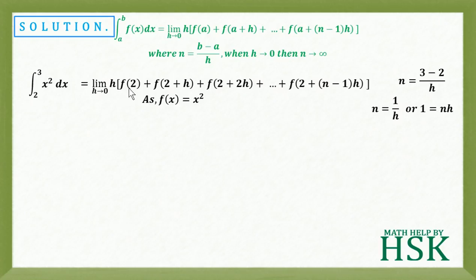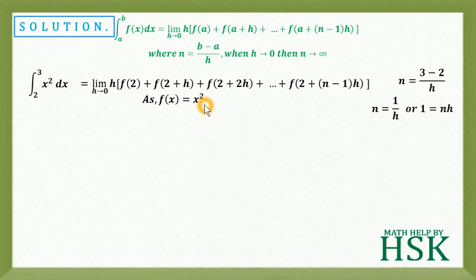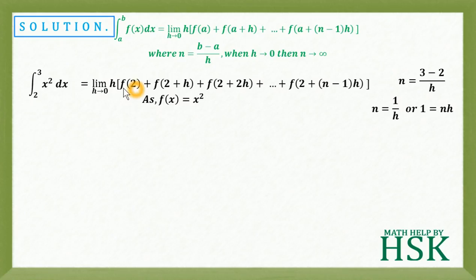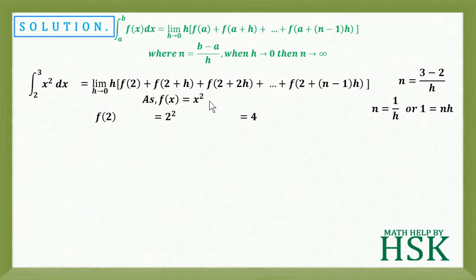It should be noted that f(x) equals x squared. So we calculate the individual terms. f of 2 equals 2 squared equals 4. Next, f of 2 plus h equals 2 plus h whole squared equals 4 plus 2 times 2 times h plus h squared.